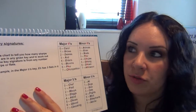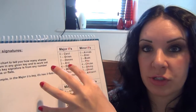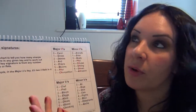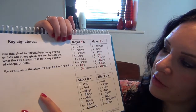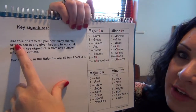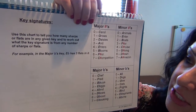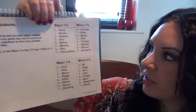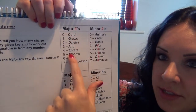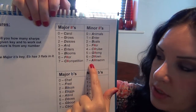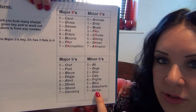I think I explained this in grade 1 and grade 2 theory, so I'm just going to very quickly run through it now for anybody that hasn't seen those other videos. Use this chart to tell you how many sharps and flats are in any given key, and to work out what the key signature is from any number of sharps or flats. So we've got major sharp keys here, minor sharp keys here, major flat keys here, and minor flat keys here.